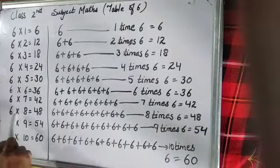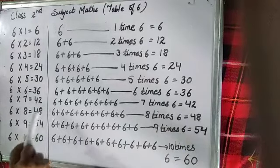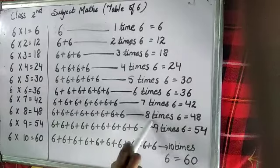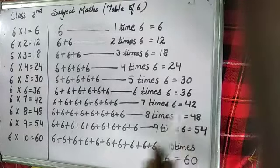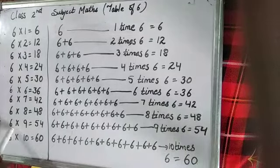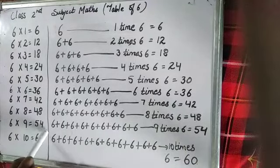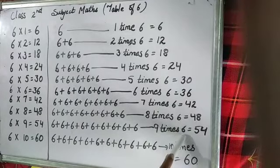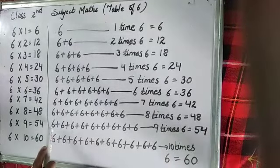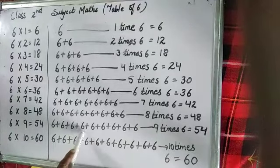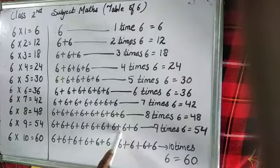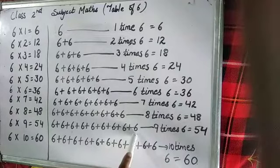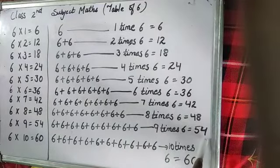Next is 6 8s are 48. Here is 8 times 6, so we say 48. And 6 9s are 54. When there is 9 times 6, it is equal to 54. 1 times 6, 2 times 6, 3 times 6, 4 times 6, 5 times 6, 7 times 6, 8 times 6, and 9 times 6. 9 times 6 is equal to 54.